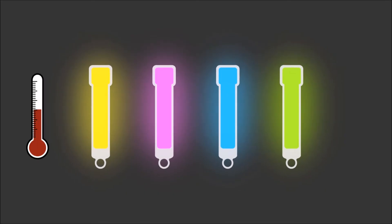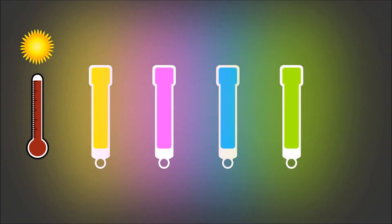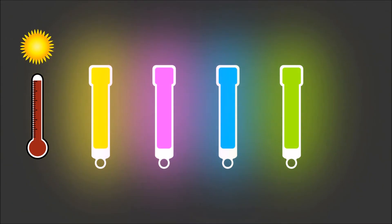Temperature affects the glow sticks. Warmer temperatures will accelerate the chemiluminescent reaction and make the glow stick shine brighter. But it also shortens the reaction time, resulting in the glow stick dimming out faster.